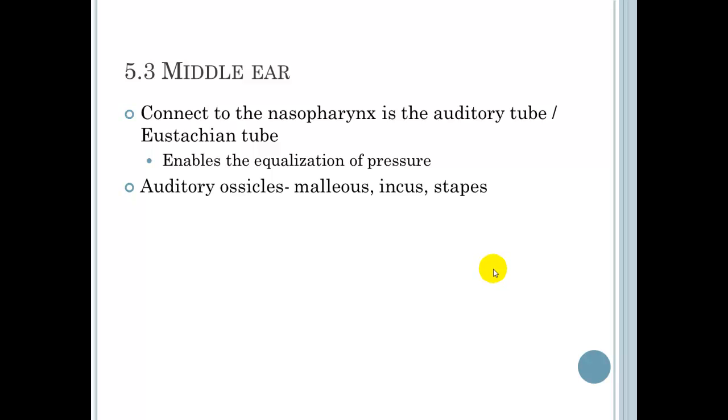The middle ear connects to the nasopharynx via the auditory tube or Eustachian tube. This enables the ear and the nasopharynx to equalize the pressure inside and outside. So if you perform Valsalva, or pinch your nose and act like you're blowing it, you'll actually pop your ears. If you're in an airplane and your ears feel like they have a lot of pressure, just do that and it should equalize the pressure.